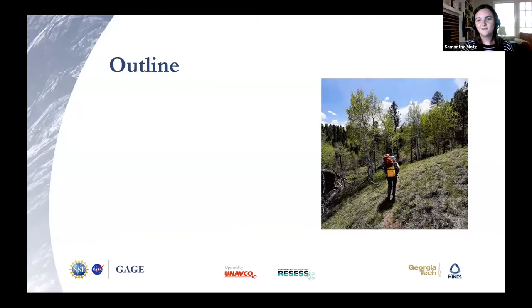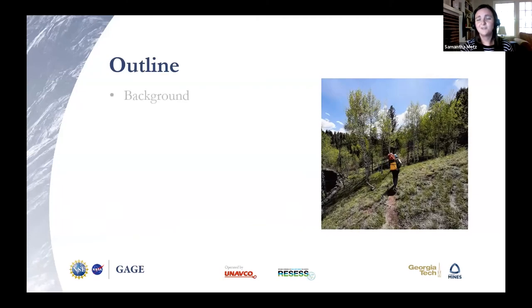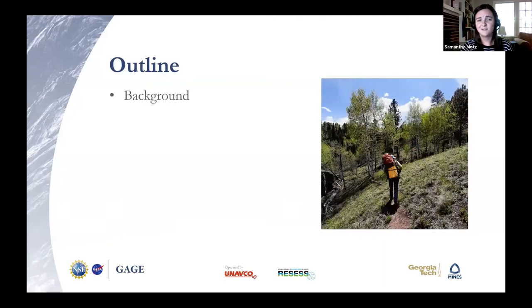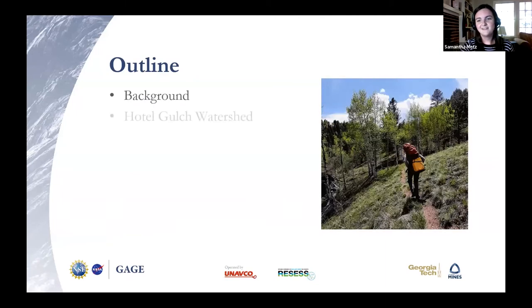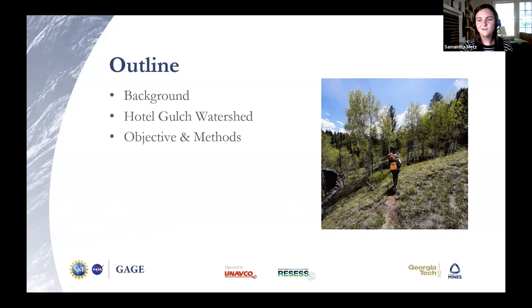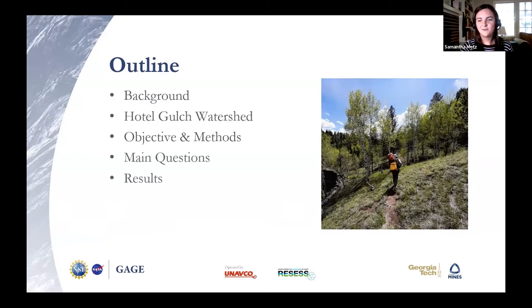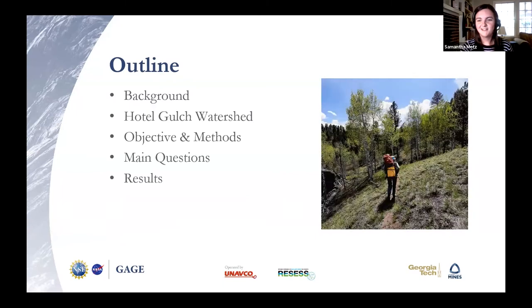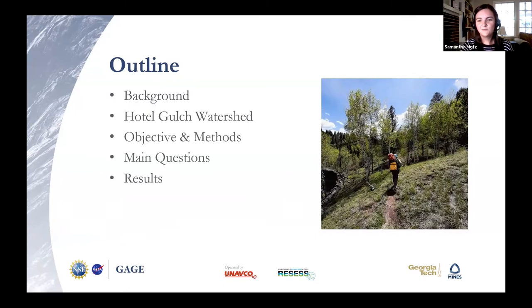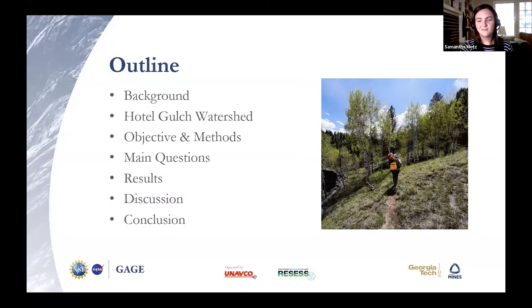Overall, the project deals with several variables in terms of topography and hydrology, so our first order of business will be to define some of these variables. Then I will present the watershed, its location, and a bit of geology. We will then get into the nitty-gritty of our objective, the methods we used, and our main questions. Afterwards, we will see some results from comparing the topographic data to the hydraulic data, and move into a brief interpretation and closing remarks.